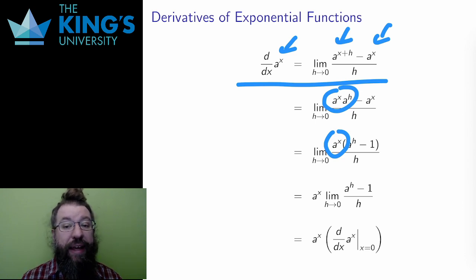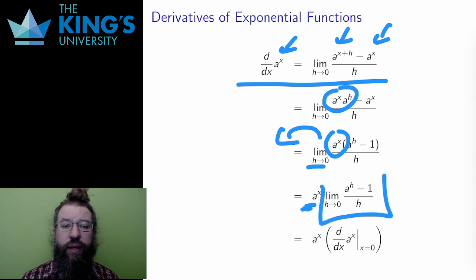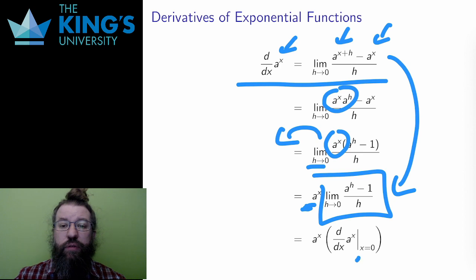Now, the limit cares about h. The limit doesn't actually care at all about x. A to the x can come out of the limit. It is a constant as far as the limit is concerned. What I have left is this limit. This looks very much like what I started with. In fact, this limit I'm left with is precisely the derivative, but just with x set to zero. It is the slope of the graph at this point (0, 1), the point that all the exponentials have in common.